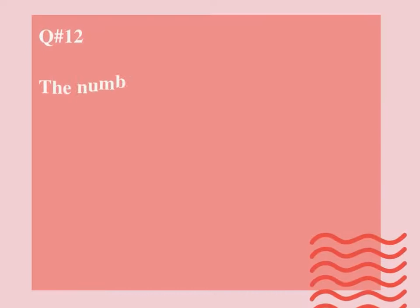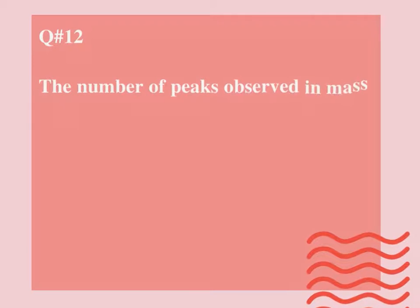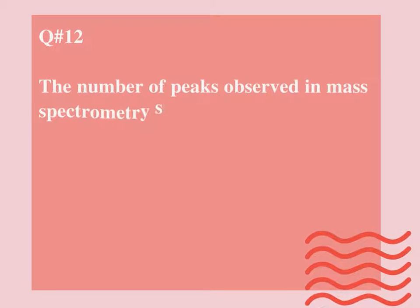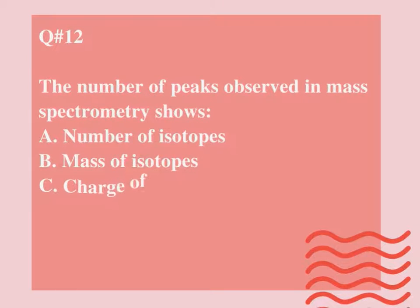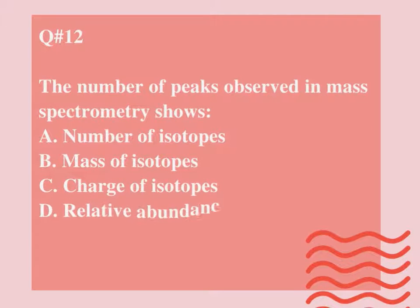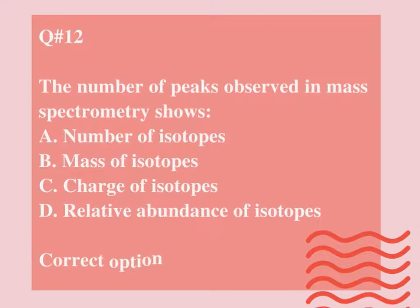Question number 12. The number of peaks observed in mass spectrometry shows: A. Number of isotopes. B. Mass of isotopes. C. Charge of isotopes. D. Relative abundance of isotopes. Correct option is A.